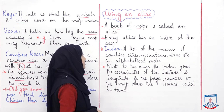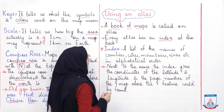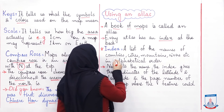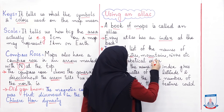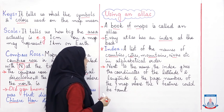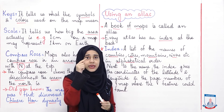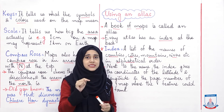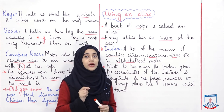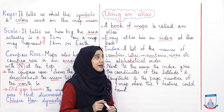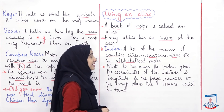Every atlas has an index at the back. Ab har atlas ki back pe ek index hota hai. Now what is an index? A list of the names of countries — yani ke ek aisi list jis mein names hote hai different countries ke, cities ke, shehron ke, mountains, rivers, etc. — in alphabetical order. Alphabetical order yani ke a se shuru ho to pehle us ka naam aayega, phir b se, c se — a, b, c ke accordingly agar hum kisi list ko tarteeb dete hai, toh iska matlab hai ke hum ne us ko alphabetical order mein likha hai.